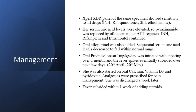We did an XDR panel to confirm no INH resistance — all drugs were sensitive. Her uric acid was high, so we removed pyrazinamide, added OFLOX to the regimen, continued INH, rifampicin, and ethambutol, and added allopurinol. Her uric acid came down within a month. For the suspected post-COVID syndrome, we started prednisolone — reluctantly, given the spine involvement — at 1 mg/kg, tapered it over a month, and her fever subsided.